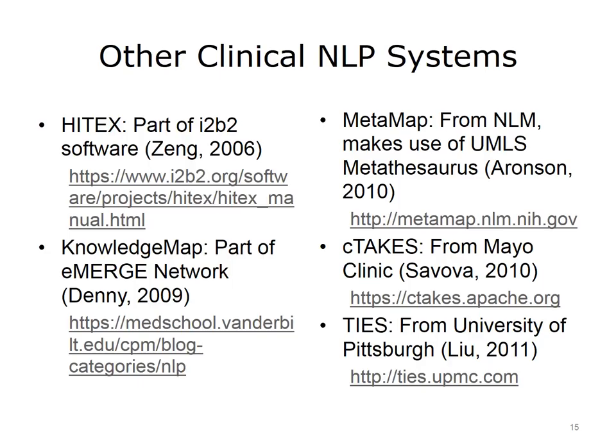There are a number of other clinical NLP systems. Some are available as open-source software. These include the HITEC system, part of the I2B2 software suite; Knowledge Map, part of the eMERGE network from Vanderbilt University; MetaMap from the National Library of Medicine, which maps text into terms from the Unified Medical Language System, or UMLS, metathesaurus; the CTAC system from Mayo Clinic, available as open-source; and the TIE system from the University of Pittsburgh.